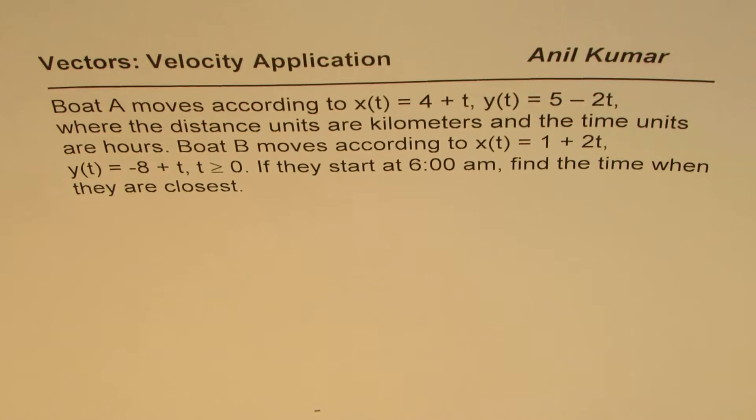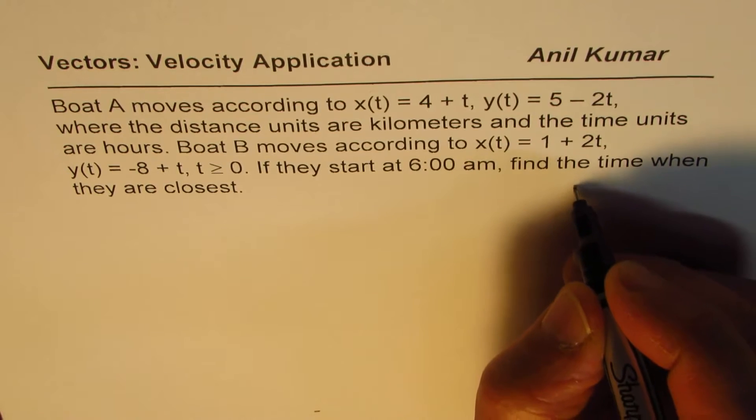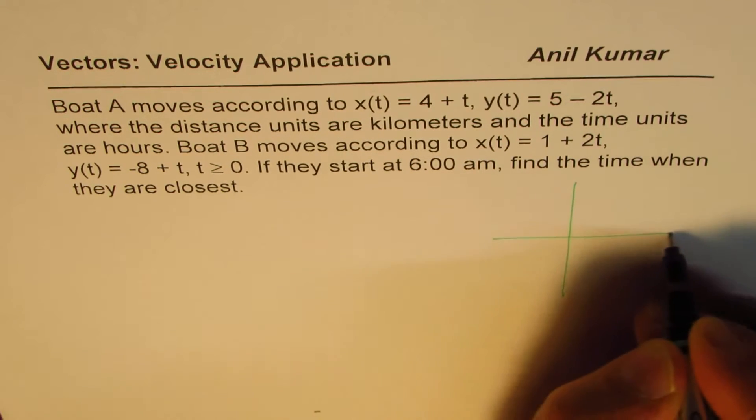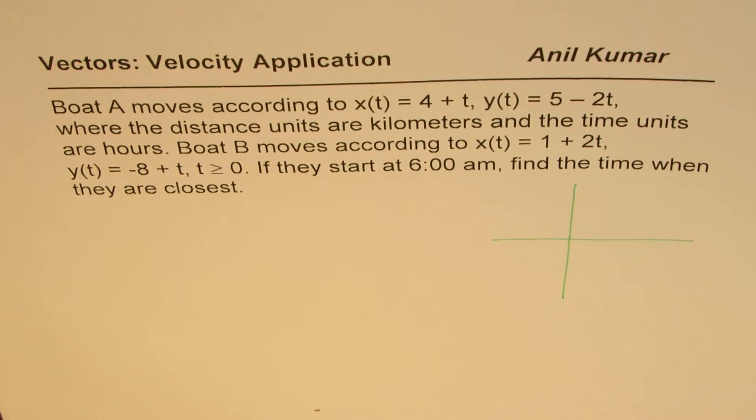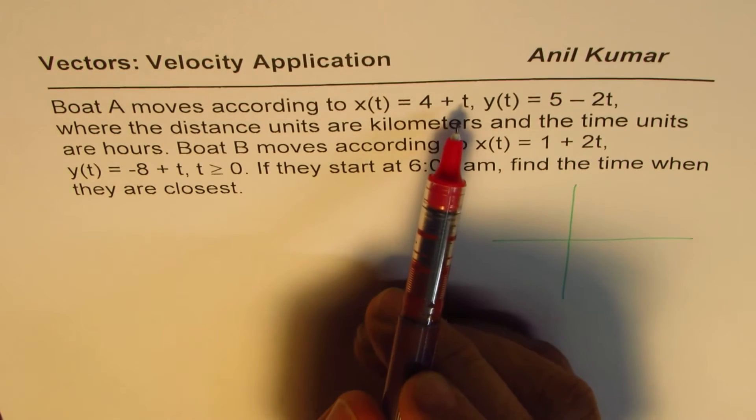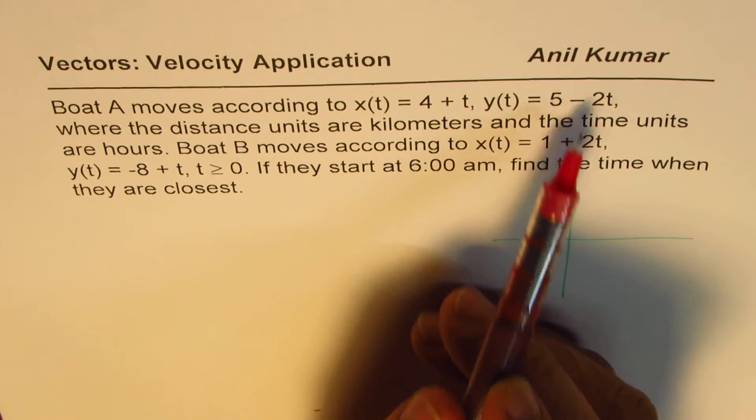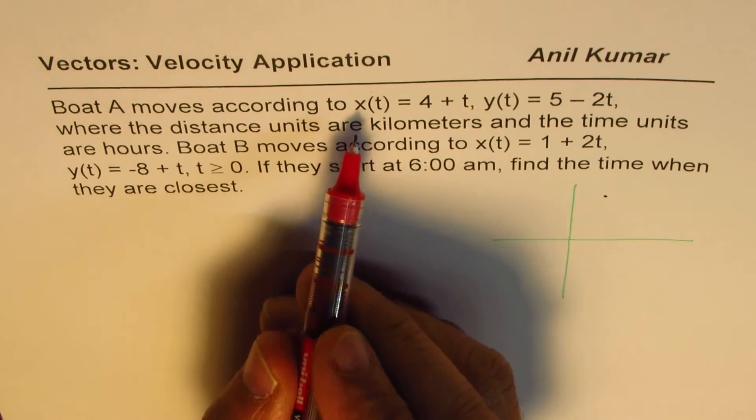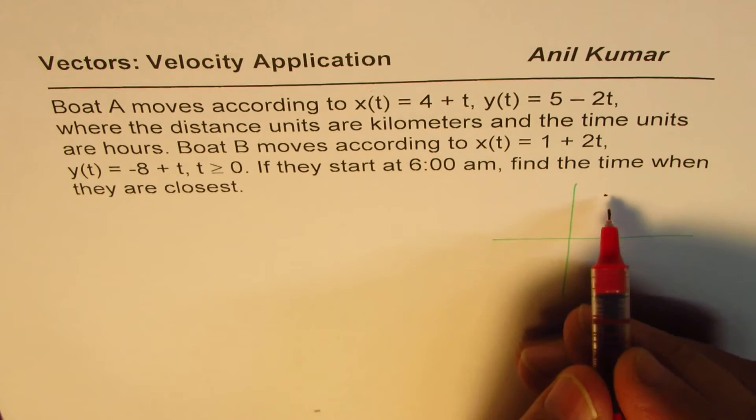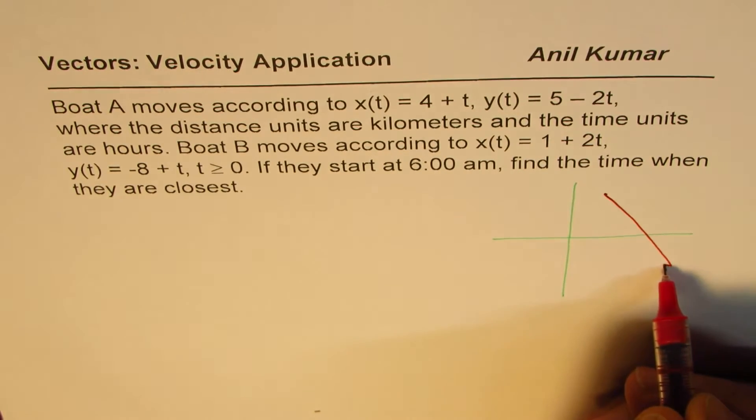You can always pause the video, answer the question and then look into my suggestions. Now let's first sketch the diagram and try to understand what we are working for. This is the xy plane. Boat A starts at position (4, 5) and it is moving in the direction 1, -2. So it's moving 1 right, 2 down, 1 right, 2 down, kind of like this.